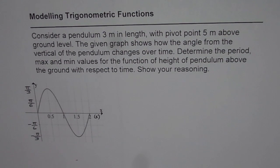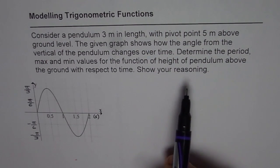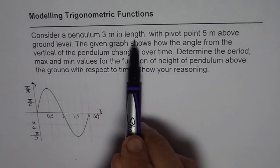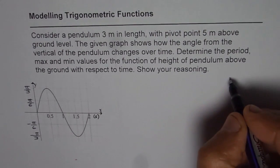You can pause the video, answer the question, and then look into my suggestion. I think we should go through this question once again. It says consider a pendulum three meters in length with pivot point five meters above the ground. So let me sketch this.